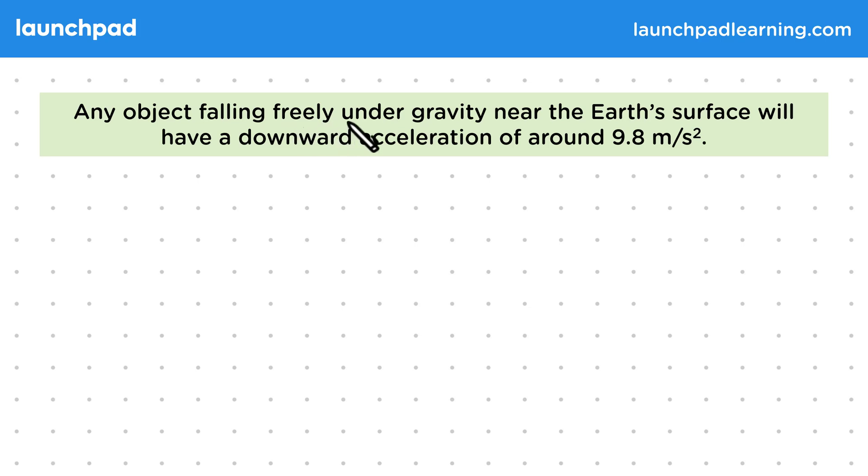Any object falling freely under gravity near the Earth's surface will have a downward acceleration of around 9.8 metres per second squared. Remember that acceleration is a measure of how much velocity will change as time passes.